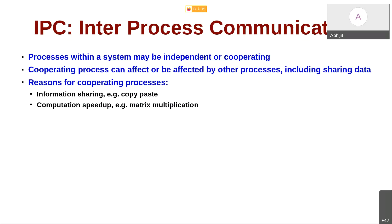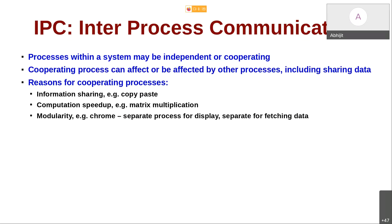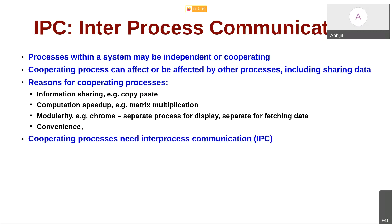Another need for IPC comes from the need for speed-up of computation. For example, matrix multiplication is quite expensive — the default algorithm is O(n³), and the best is O(n²). A better approach is to split the work across multiple processes, let them communicate about the result, and then get the result. Some applications also want modularity — for example, Chrome has a separate process for displaying the HTML page and a separate process for fetching data. So there are a variety of needs for IPC, and all cooperating processes need IPC.